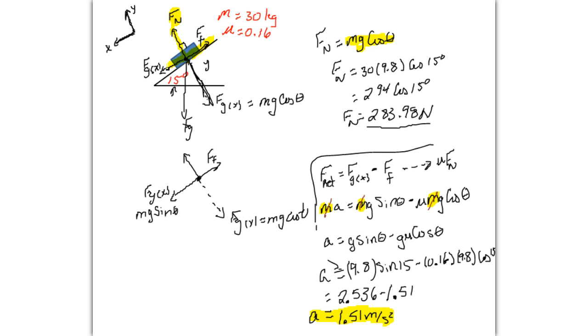You also have an applied force which is making the object move, which is the x component of gravity. So gravity is acting down here, but you need the x component that's going in the direction of motion, and that formula is mg sine theta.